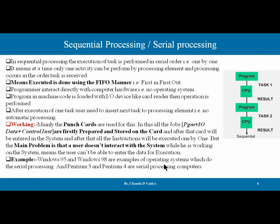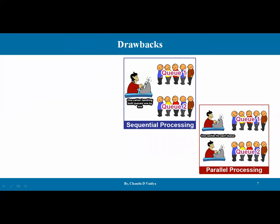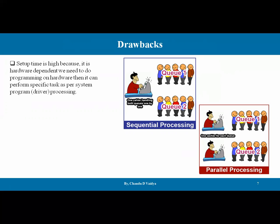Examples of this type include Windows 95 and Windows 98, and the platform available on Pentium 3 and Pentium 4 machines, which are serial computer machines. To understand sequential operation with an analogy: imagine a cashier sitting at a counter with two queues — queue one and queue two. The cashier handles one person at a time from one queue. This is sequential processing.